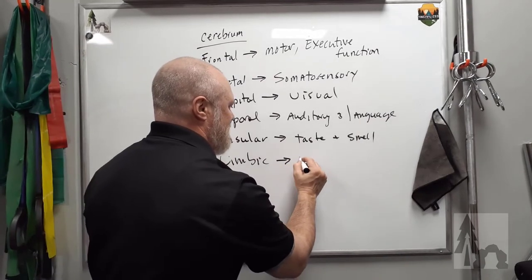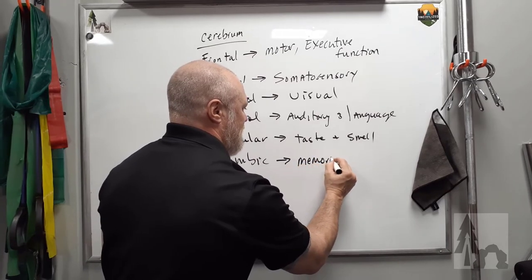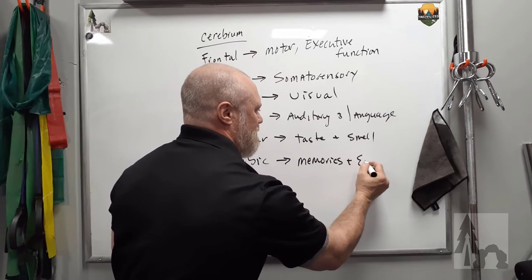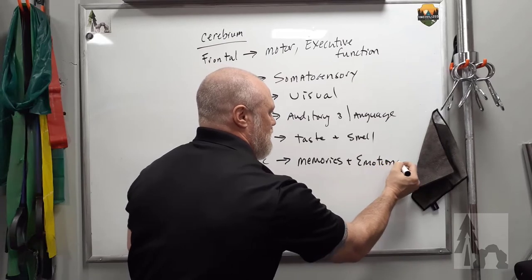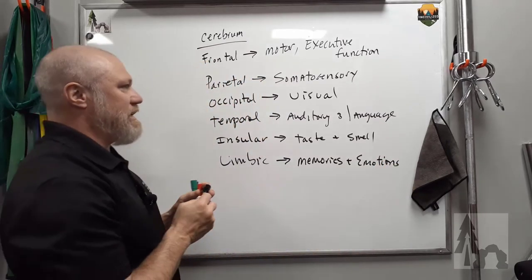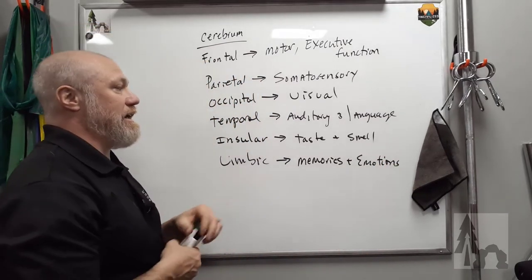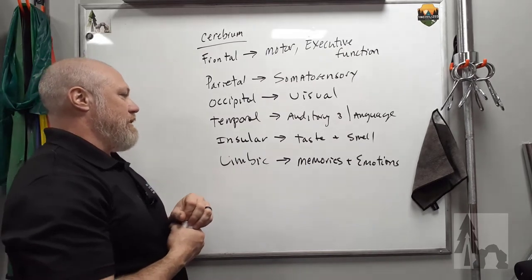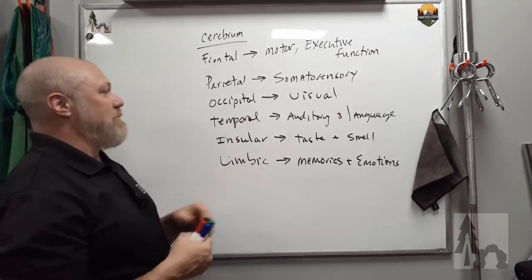Think of that as processing memories. And it's involved in emotions. So just think memories and emotions. Oversimplifying, but without getting into too much like the basal nuclei and the amygdalae and other things. We just call that the limbic lobe.